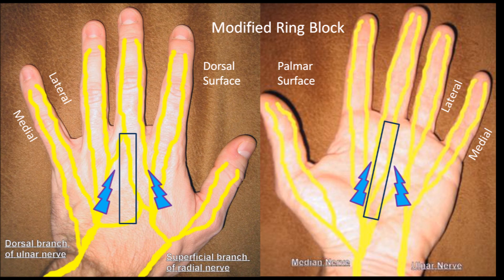The modified ring block, which is the one we will be showing you how to perform, also uses 4 individual injections to anaesthetize the nerves, but it has the benefit of a greater anaesthetic effect than the normal ring block, allowing you to perform procedures proximal to the PIP joint. To perform this block you need to palpate for the flexor and extensor tendons proximal to the MCP and inject on either side of them.